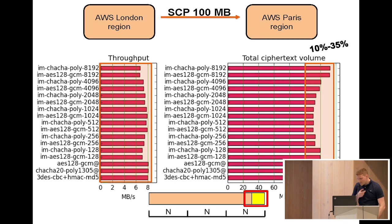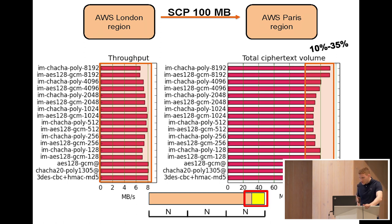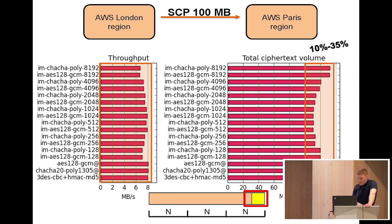This changes in the second experiment, where instead of two availability zones we used two different regions. The distance greatly increases and the network is not so good. It's clear that performance is no longer computationally dependent but more network dependent, and it has a really great similarity with a graph showing ciphertext expansion for each encryption scheme in OpenSSH.